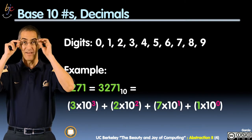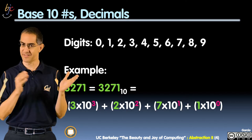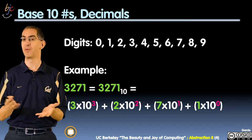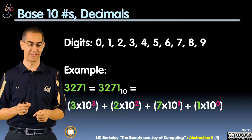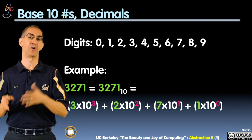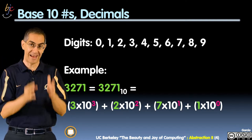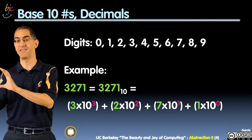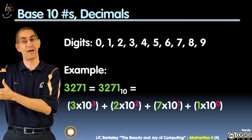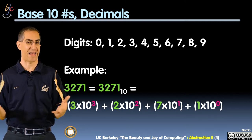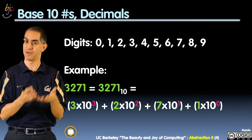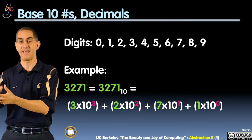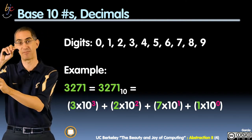You're all familiar with base ten, decimals. You have ten digits, zero through nine. An example of a number is 3271. What that really means — this is what you learned in kindergarten — is three is in the thousandths place, two is in the hundredths place, seven is in the tens place, and one is in the ones place. Mathematically, it's three times ten to the three, plus 200, plus 70, plus one. It's the coefficient times the base to the power, and that exponent changes as you go down.